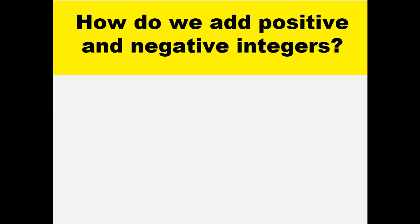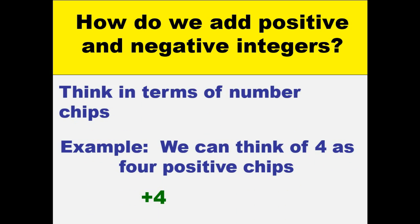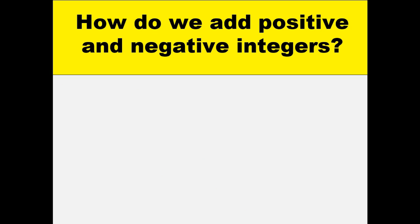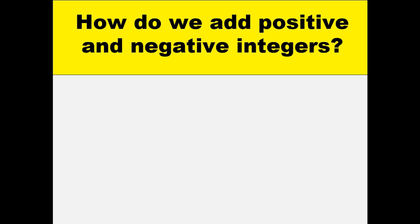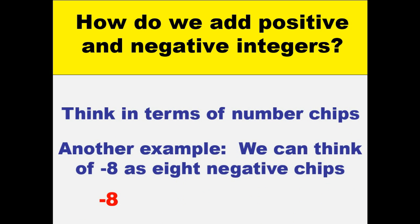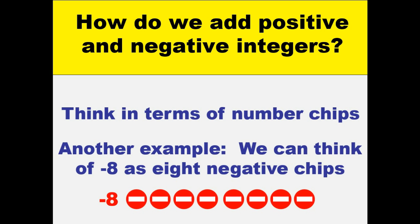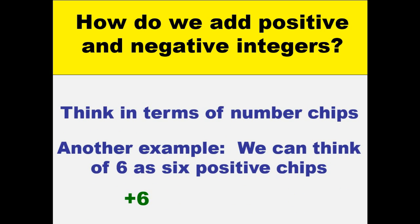The question is, how do we add positive and negative integers? Let's think first about number chips. We can think of positive 4 as 4 positive chips. We can think of negative 3 as 3 negative chips — chips with negative signs. Negative 8 uses 8 negative chips, and positive 6 uses 6 positive chips.